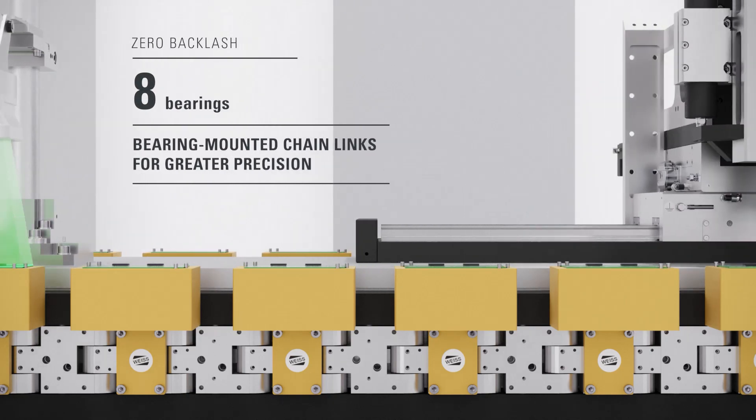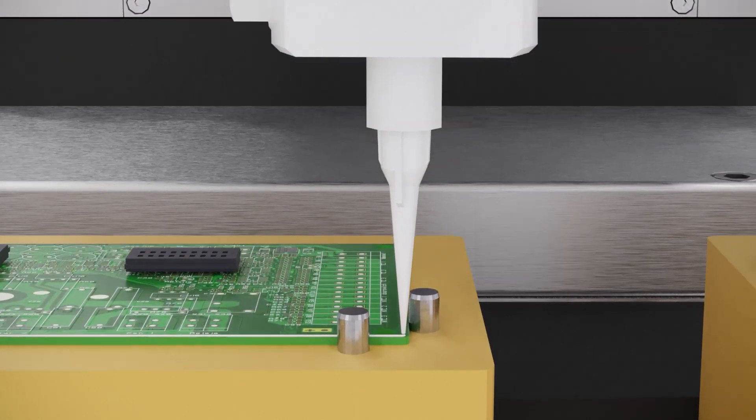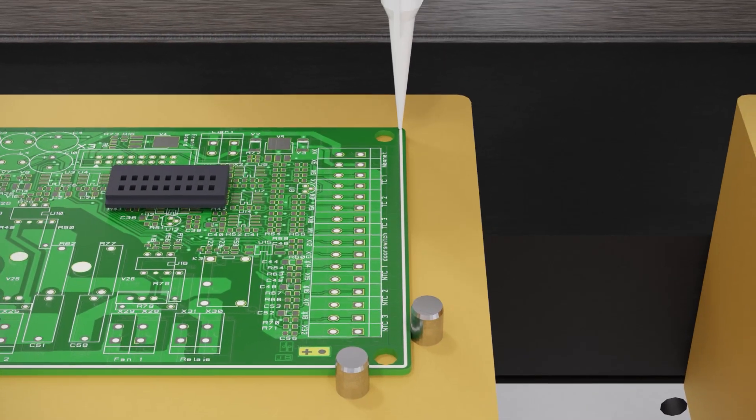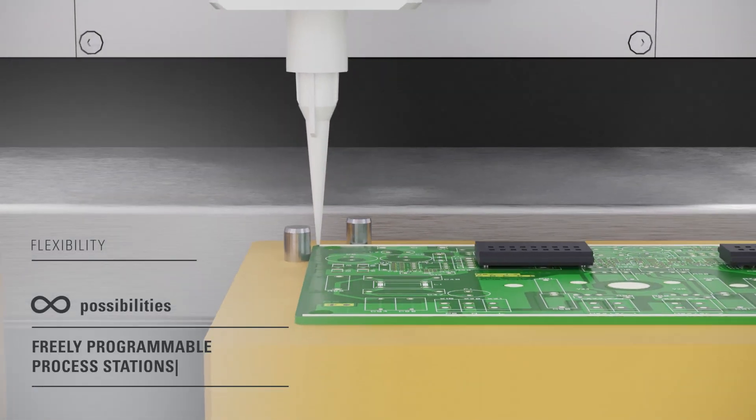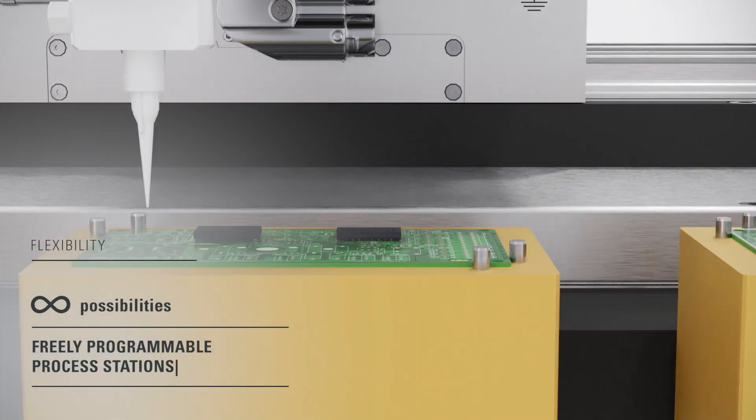LS-Link achieves this high level of precision by optimally combining the gear unit and motor, as well as having a total of eight bearings per chain link. In this way, Weiss guarantees a high level of process reliability, as well as reliability for electronics production.